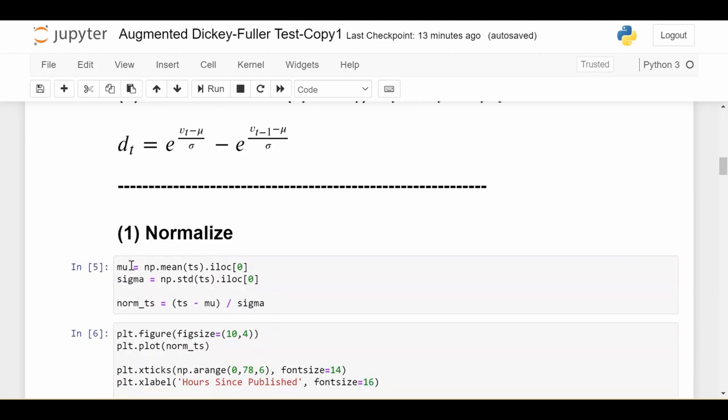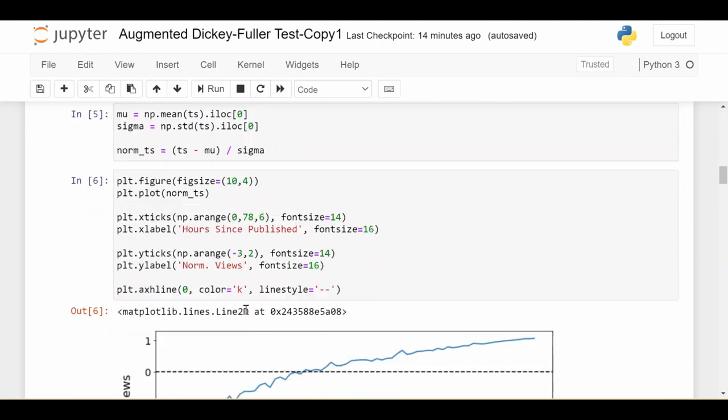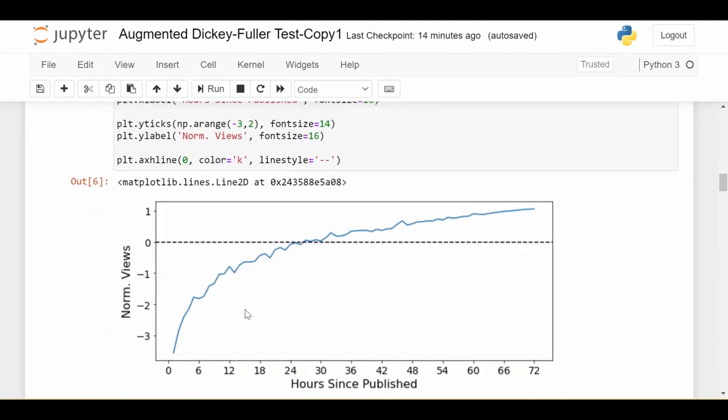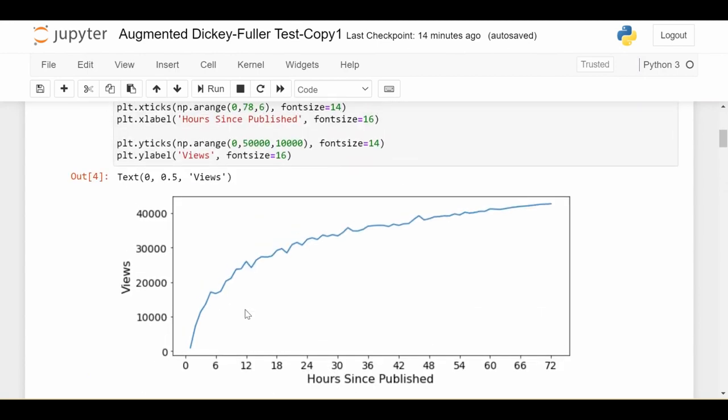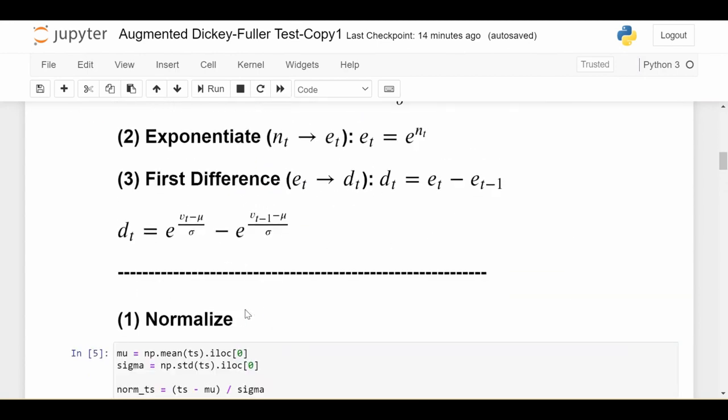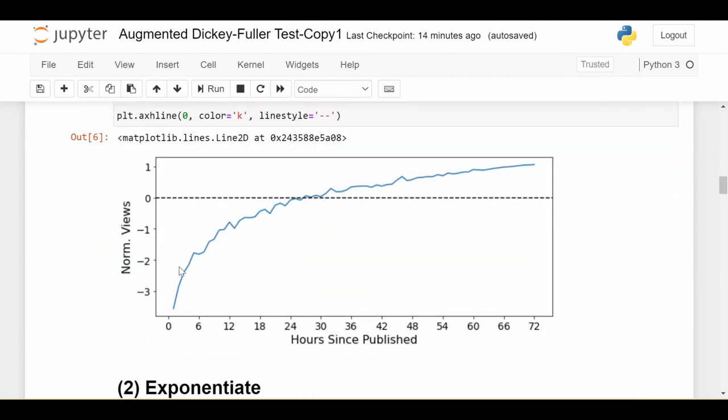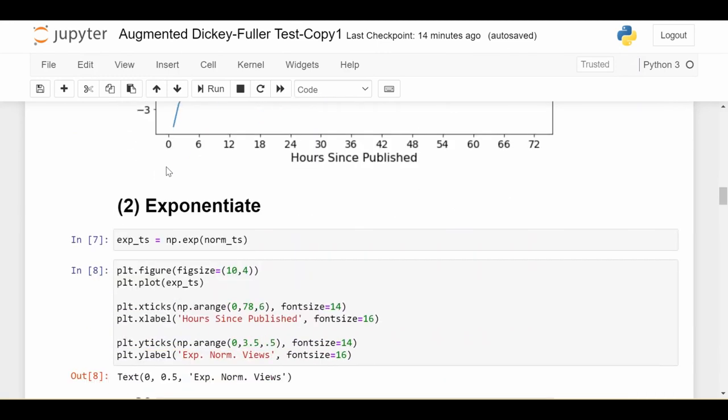Normalization, first things first. Get mu and sigma, subtract mu from the series and divide by sigma, and we get this series. We haven't changed the shape of the series at all, so it's just as non-stationary as before. But now notice the numbers are between negative 3 and 1, which is much nicer for the exponentiation step.